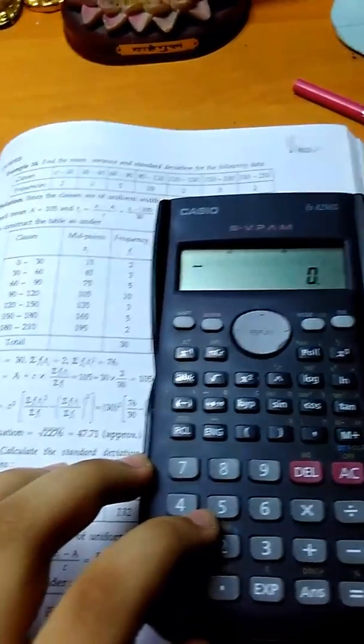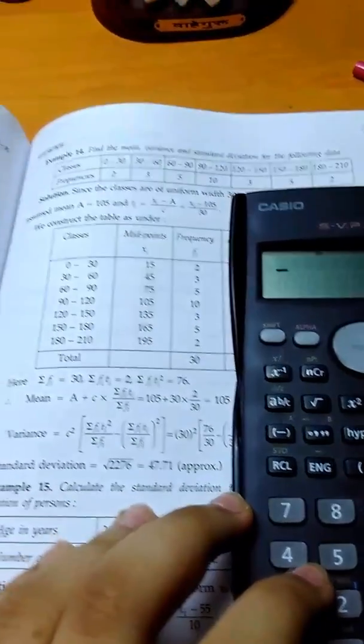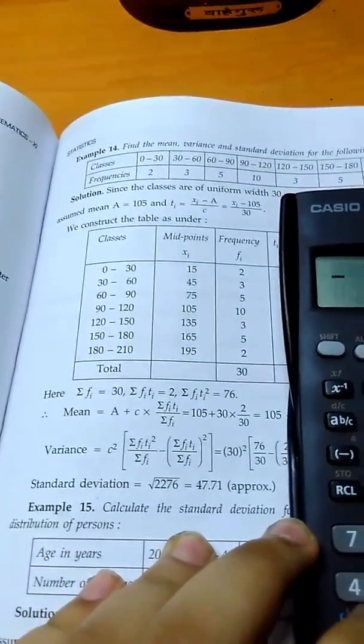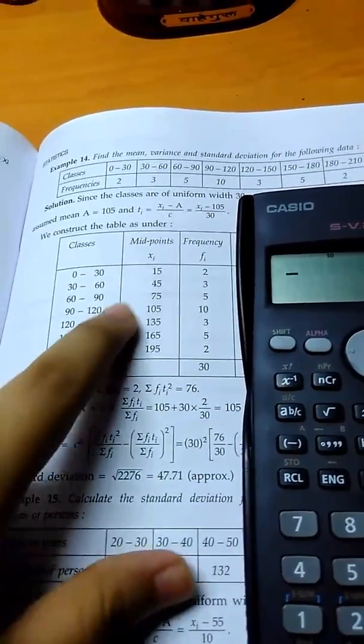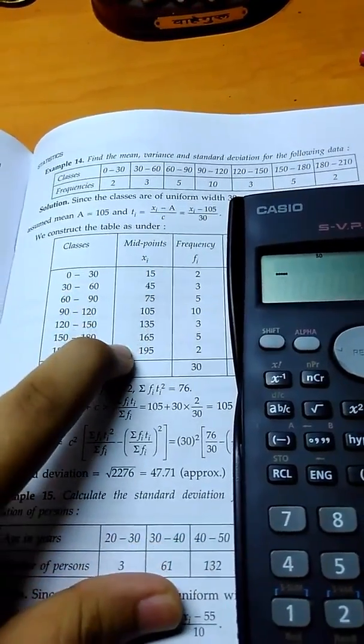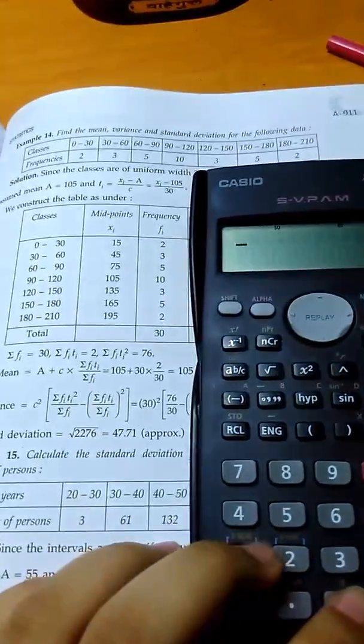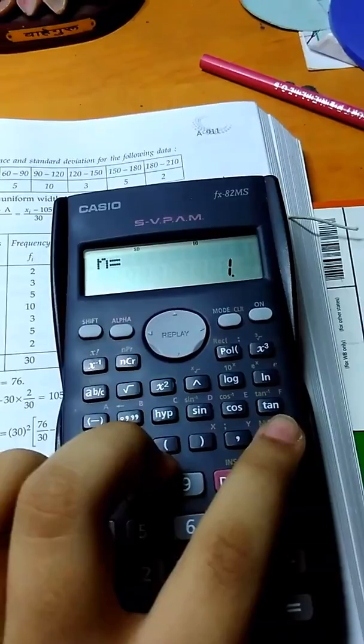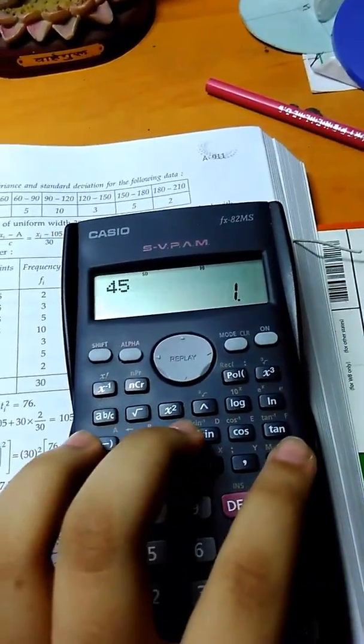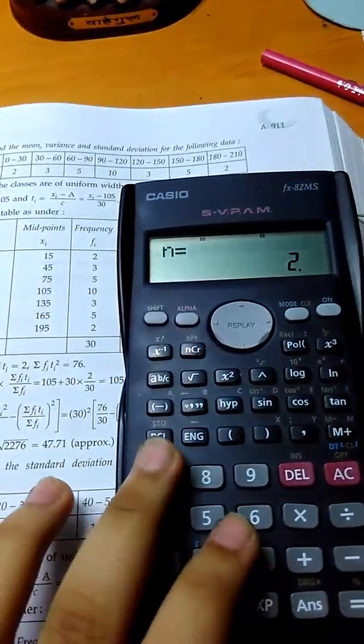Next thing you have to do is enter the values. For that, I'm going to take this sum as an example here. We're going to take these values, x1 midpoints. So, the first value, which is 15, and press M+, second value, 45,